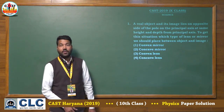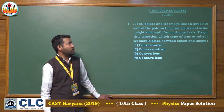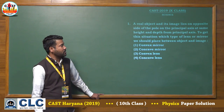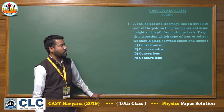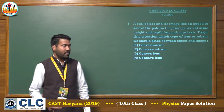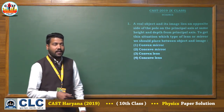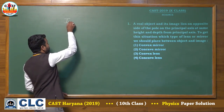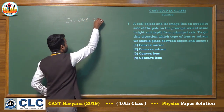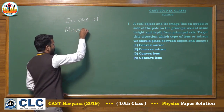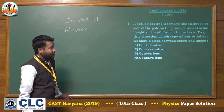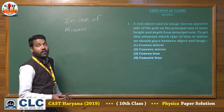The first question: a real object and its image lying on opposite sides of the pole on the principal axis at the same height and depth from the principal axis — to get this situation, which type of lens or mirror should we place between the object and image? In case of a mirror, the object could be real or virtual, and correspondingly the image would be virtual or real.